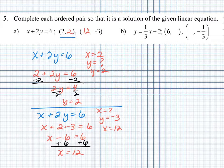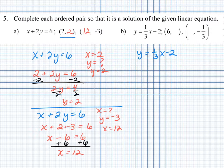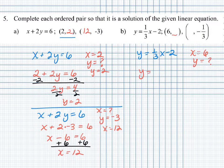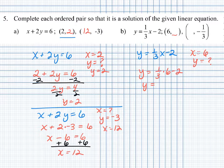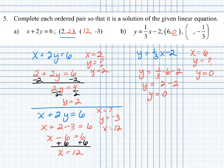For part B, our linear equation is y equals one-third x minus 2. The first point given is (6, blank), so x equals 6 and y is unknown. Plugging in x equals 6: y equals one-third times 6, which is 2, and 2 minus 2 equals 0. So when x equals 6, y equals 0, and our solution is the ordered pair (6, 0).